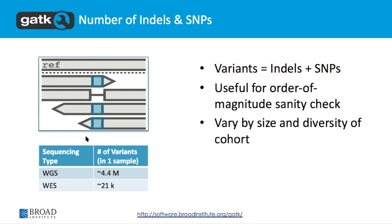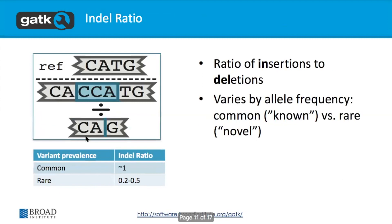The raw number, depending on sequencing type: you'll see about 4.4 million variants for whole genome sequencing, about 21,000 for whole exome sequencing. This is in one sample, so you would have to multiply according to however many samples you're looking at. This is an order-of-magnitude sanity check, varying by size and diversity of the cohort.